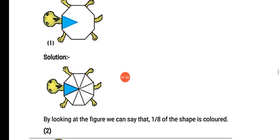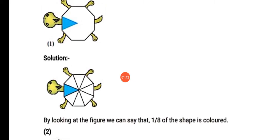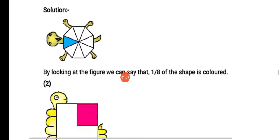By looking at the figure, hum ye figure ko dhek ke bata sakte hai ki is mein total 8 triangles ban rahe hai. Jis mein se 1 triangle ko color kar diya hai. Toh humara answer kya hoga — 1 upon 8. You have to use your scale and pencil to draw these partitions in your textbook.